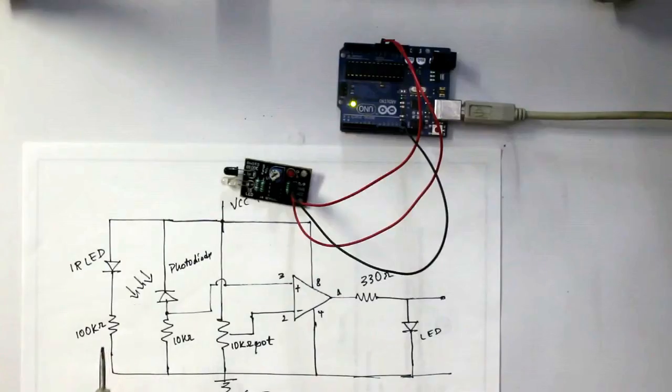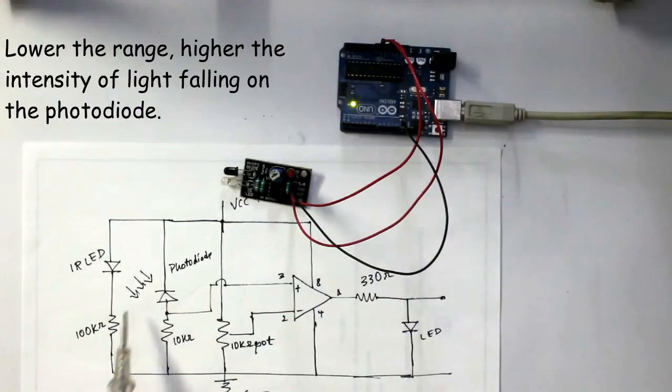The intensity will be low only when the range is more, and the intensity is high only when the range is less.